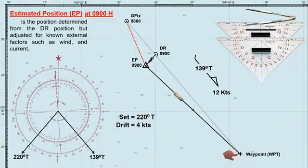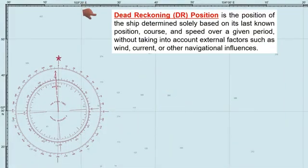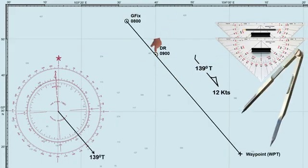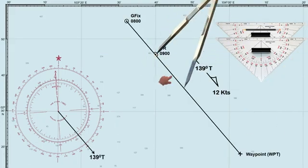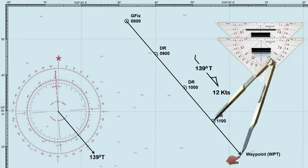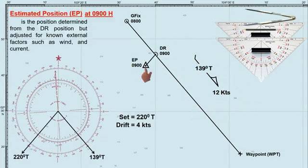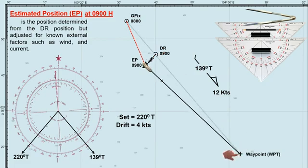In this video, we'll be discussing two essential navigational concepts: the dead reckoning position and the estimated position. Each of these methods plays a vital role in determining a ship's position at sea, especially when primary tools like GPS are unavailable. We'll break down the differences between them, how they are used in navigation, and why it's important to understand these distinctions for safe and effective passage planning.